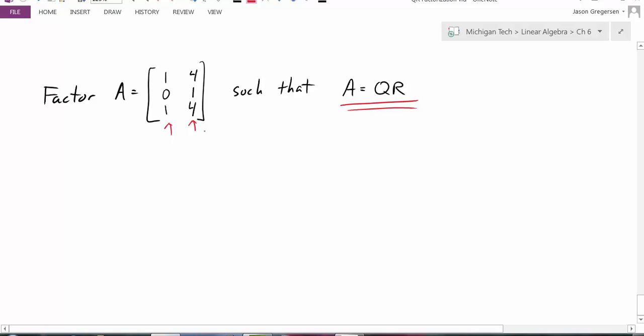So to do that, we'll start. I'll give these two names. I'll call this one U1 and I'll call this other column U2. We want to find a V1 and V2 to make this an orthonormal basis for this column space. So to do that, we're first going to let V1 equal to U1. That's our first step.